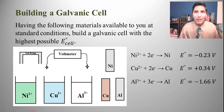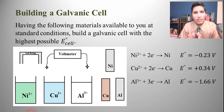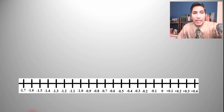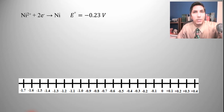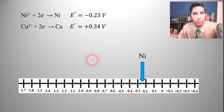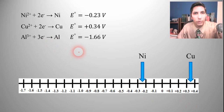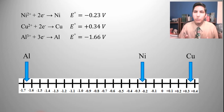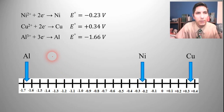How do we make the galvanic cell with the highest possible voltage? Think of all these standard reduction potential values as points on a number line. Plot nickel at −0.23, copper at +0.34, and aluminum at −1.66. To get the highest potential difference, we're trying to find the two elements that are farthest away from each other on that number line. That's going to be the aluminum and the copper.